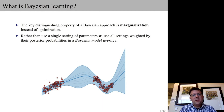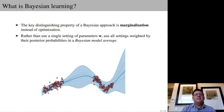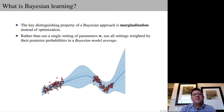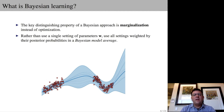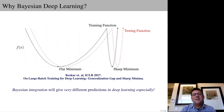In this tutorial, we'll argue that the key distinguishing property of a Bayesian approach is marginalization rather than optimization. That is, instead of using a single setting of parameters w, we want to use all possible settings of parameters and weight them by their posterior probabilities in what's called a Bayesian model average. We'll argue that this Bayesian model average will be especially relevant in deep learning.